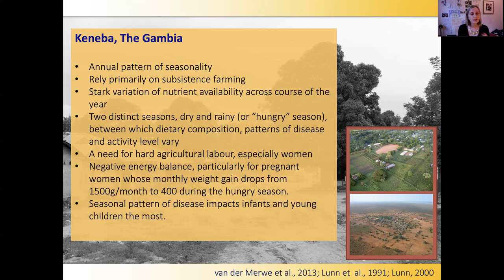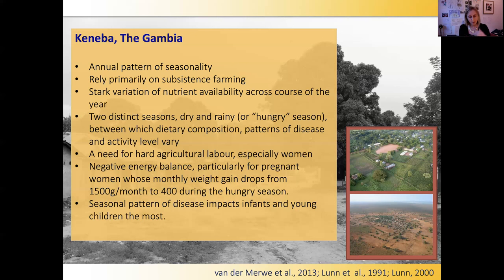Surveillance started at this site because of some key factors that make this population very interesting to study. They have a very stark pattern of seasonality — a stark variation of nutrients available across the year — with two distinct seasons: the dry season and the rainy or hungry season when food from the previous harvest has been used up. Because of this, dietary composition, patterns of disease, and activity levels of adults vary greatly, with very hard agricultural labor especially for women engaged in subsistence farming.